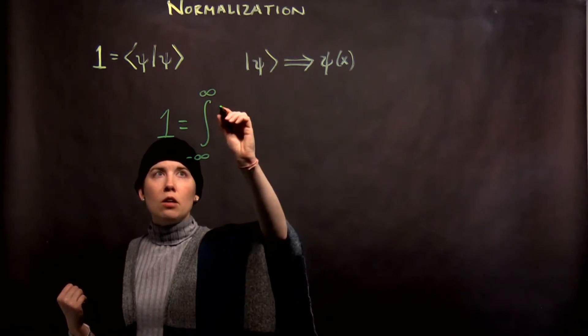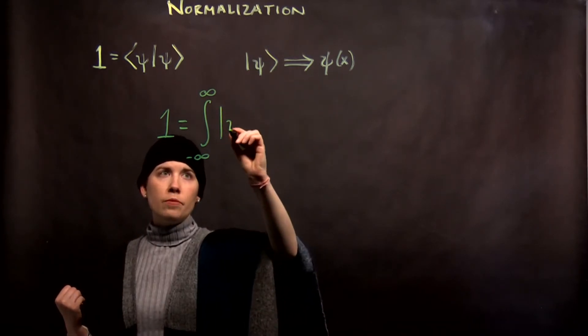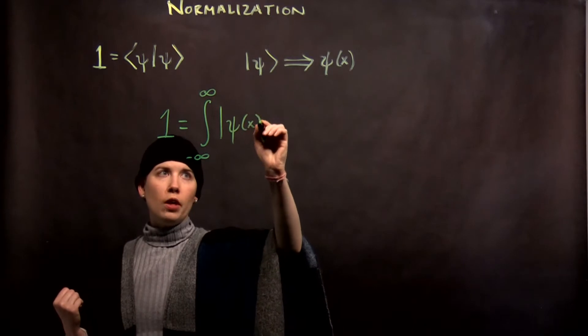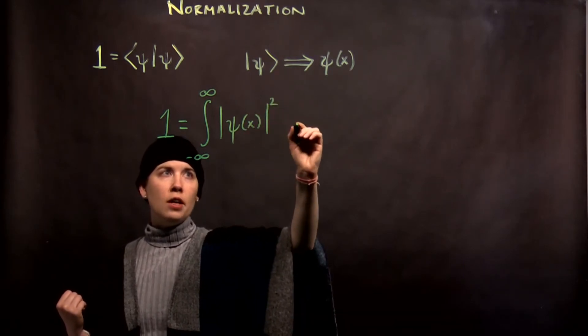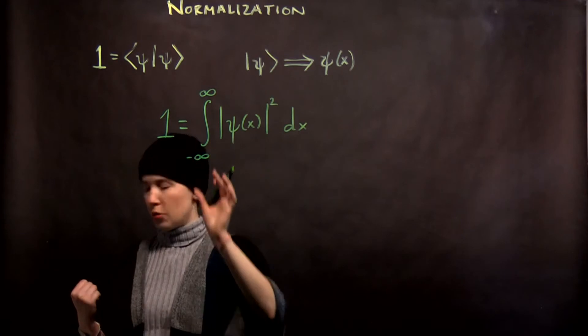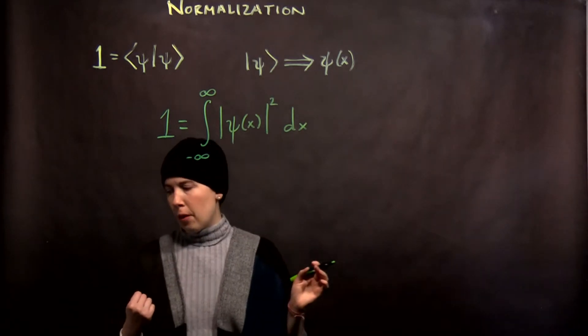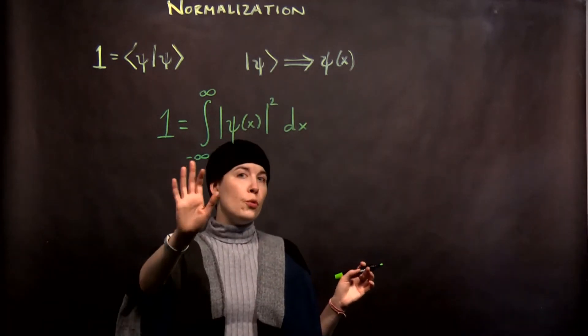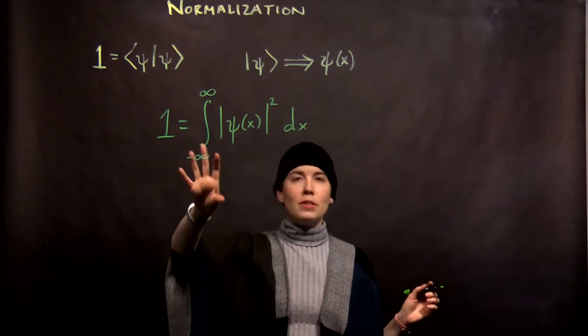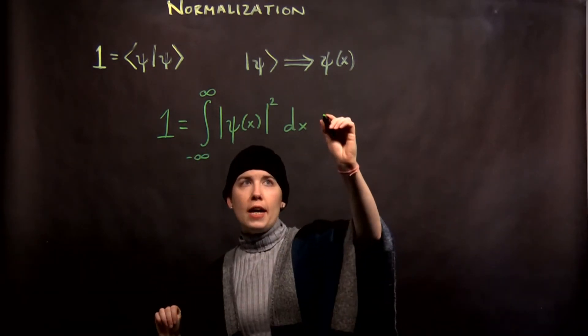So we take our wave function, and it's going to be magnitude squared, and we integrate that over all space. So that is our new normalization condition.